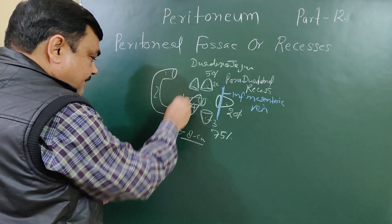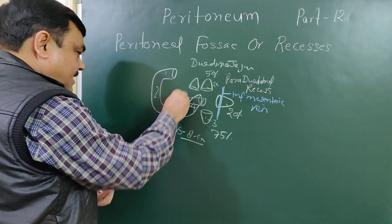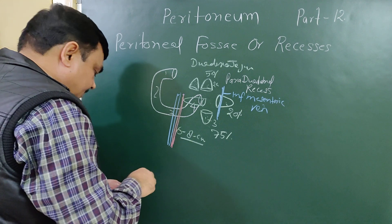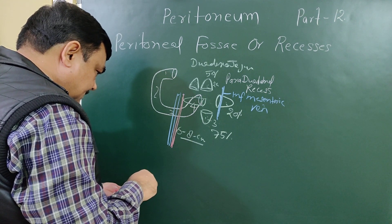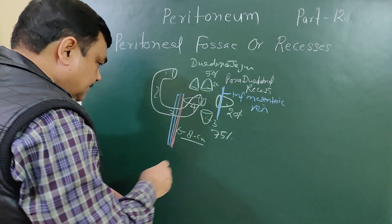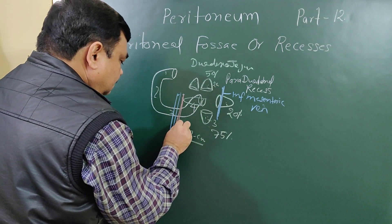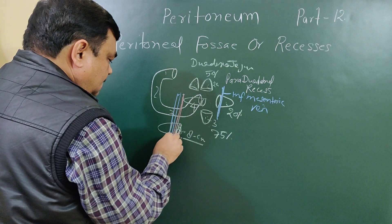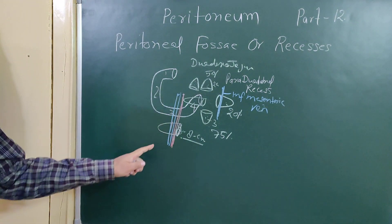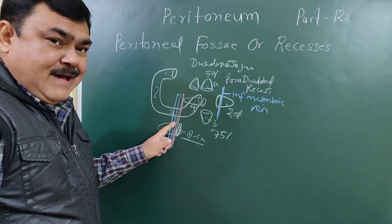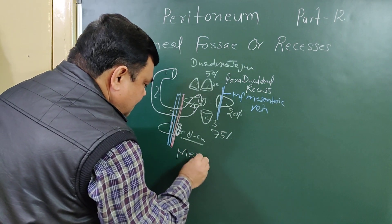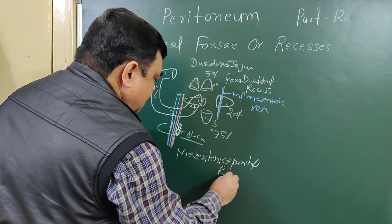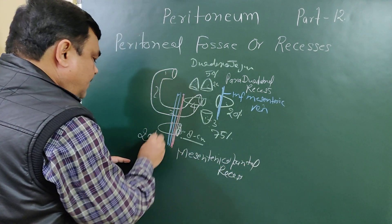Here is the superior mesenteric artery and the superior mesenteric vein. One recess lies in relation to these structures — this recess is known as the mesenterico-parietal recess. It occurs in twenty percent of cases.